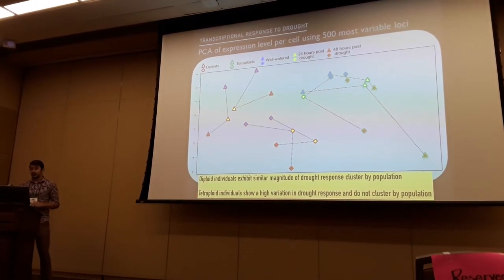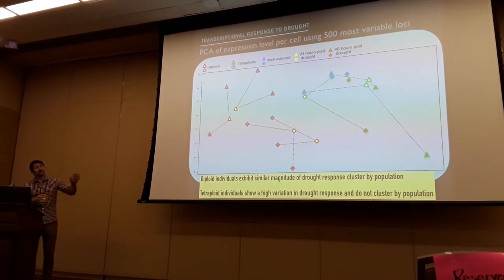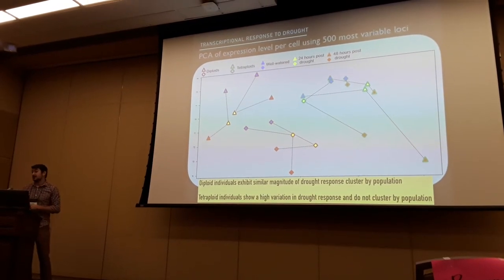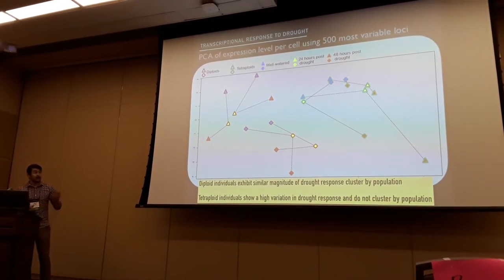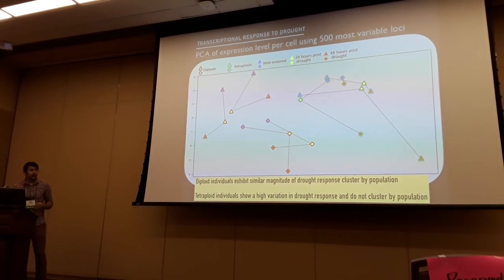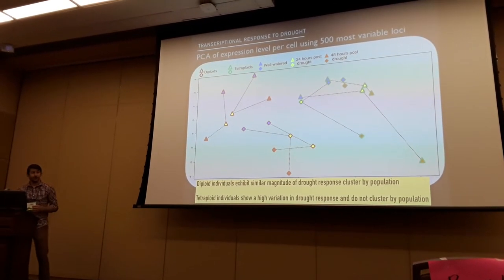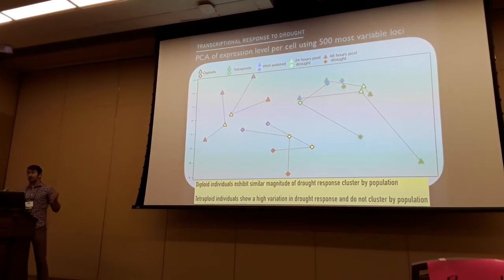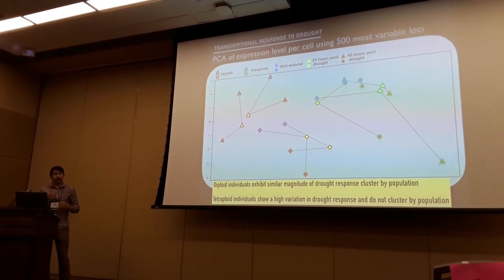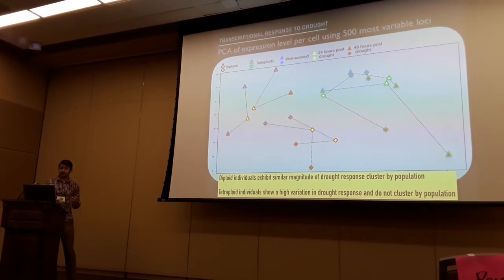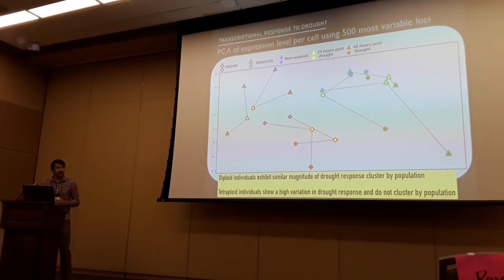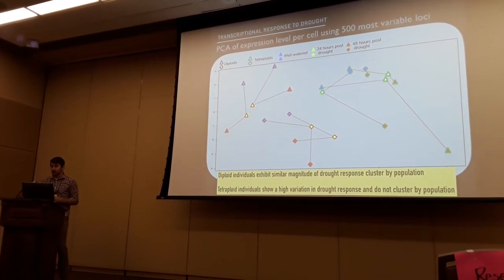We don't see any of that in the tetraploids. There's no clustering by population, which makes sense given the phylogenetic data. Nor do we see any consistency in the magnitude of drought response — some individuals respond very little overall, some respond mostly over the first day and vice versa. There's just a lot of variability going on that we don't see in the diploids.